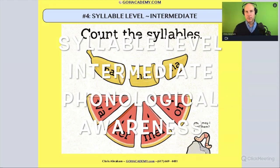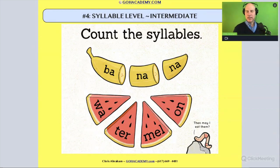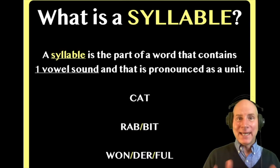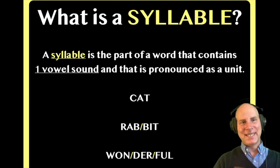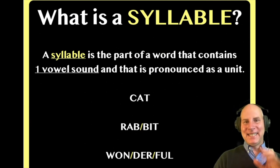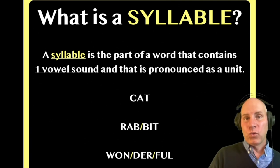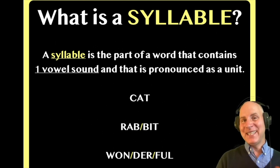Let's take a look at the syllable level within phonological awareness. The syllable level is a little bit harder than hearing similarities in words. We're going to take a word and break it up into its syllables. A syllable is a part of a word that contains one vowel sound and is its own unit. So 'cat' is a single syllable word with one vowel sound, 'rabbit' has two distinct vowel sounds, and 'wonderful' has three.